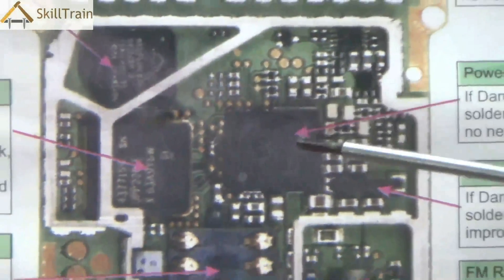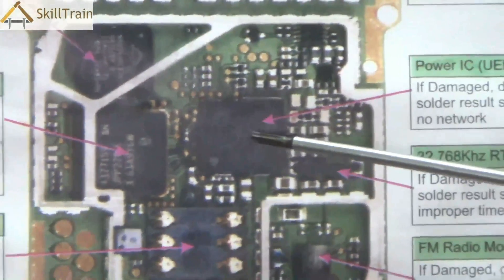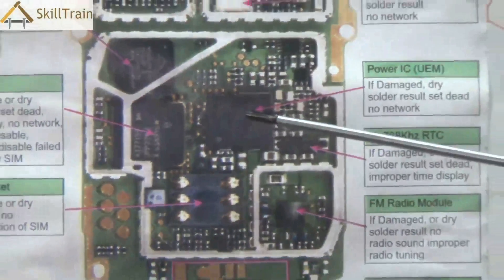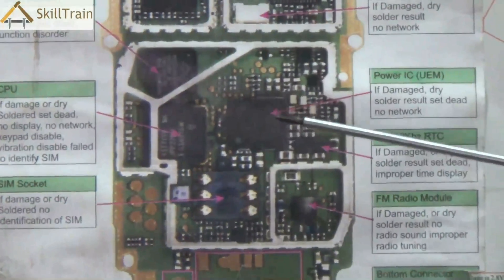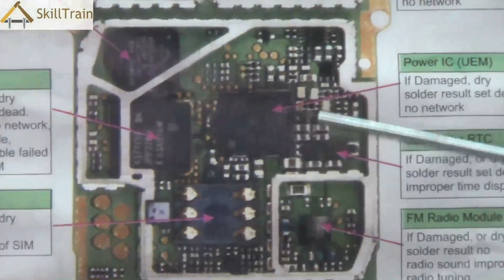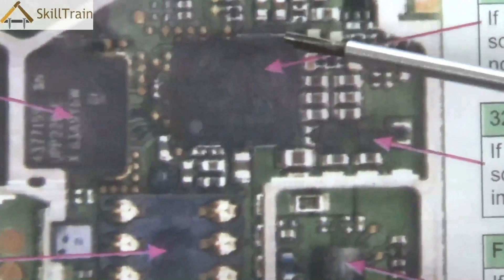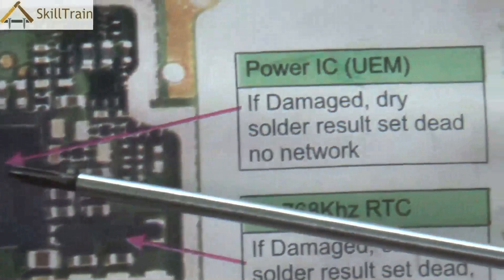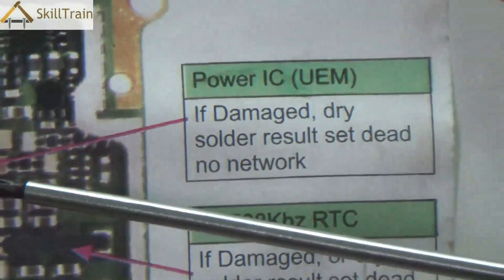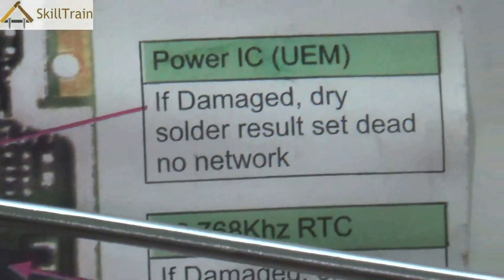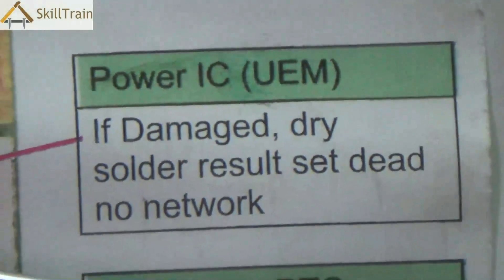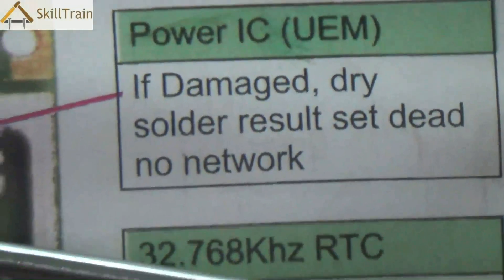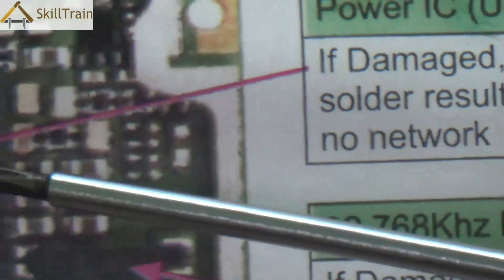Let's now go underneath and understand what the components are here. The first one you see is called the power IC. The power IC regulates the power supply to the entire board. Whenever the power IC is damaged you will have a problem with the mobile phone — the device could be completely dead or the network may not be available, because the power IC supplies and regulates power to different components.